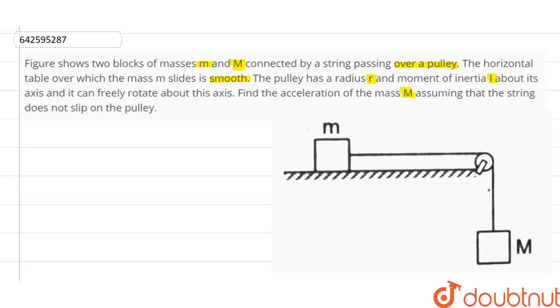So the string does not slip on the pulley and also the string is inextensible, that is there is no change in the length of the string. So if mass capital M is moving down with an acceleration a, then mass small m will move horizontally with an acceleration a as well because the string is inextensible.